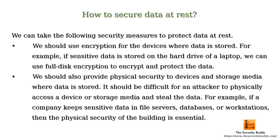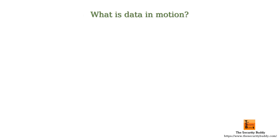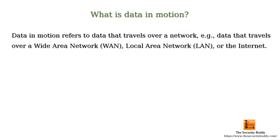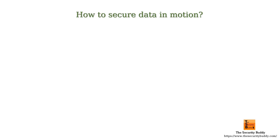What is data in motion? Data in motion refers to data that travels over a network, for example, data that travels over a wide area network, local area network, or the internet. How to secure data in motion?